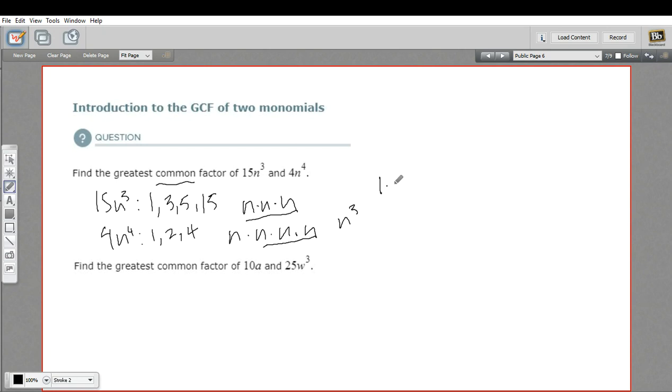So that is n to the third that they have in common. And we multiply our number part times our variable part. We have 1 times n to the third, or just n to the third. So this is the greatest common factor. You could divide this one by n to the third, you'd end up with 15. You could divide this one by n to the third, you'd end up with 4n. And all the division comes out even still.